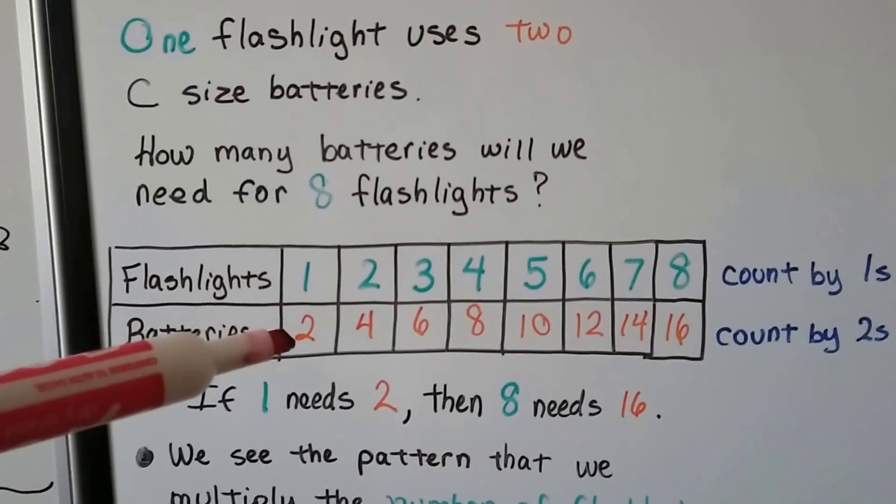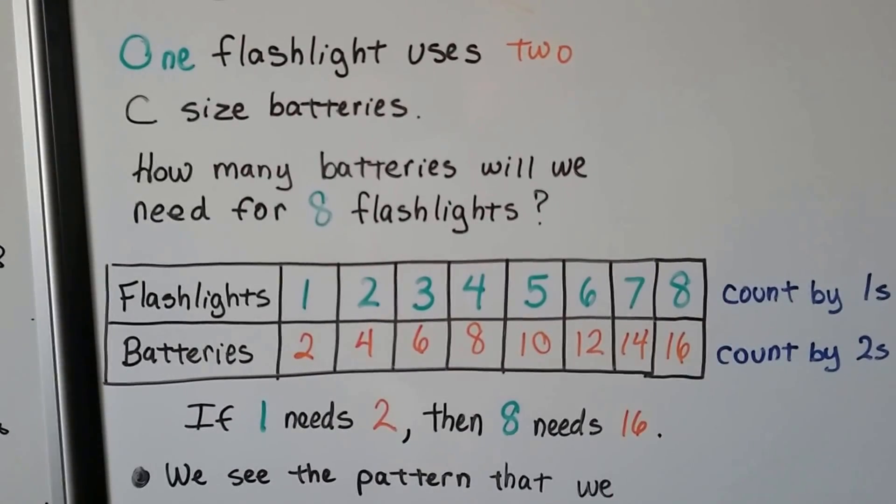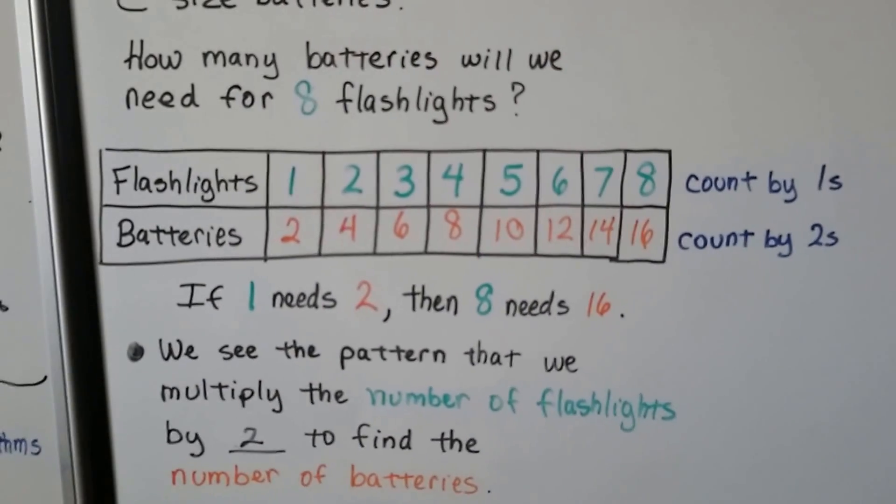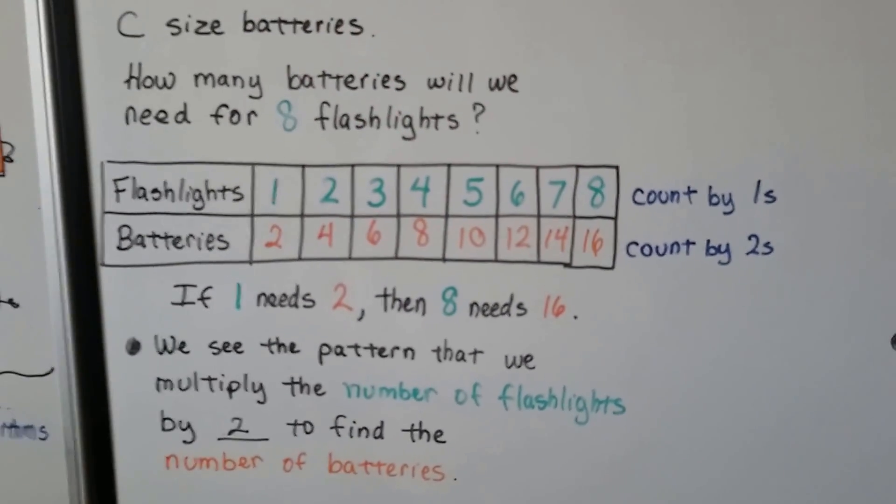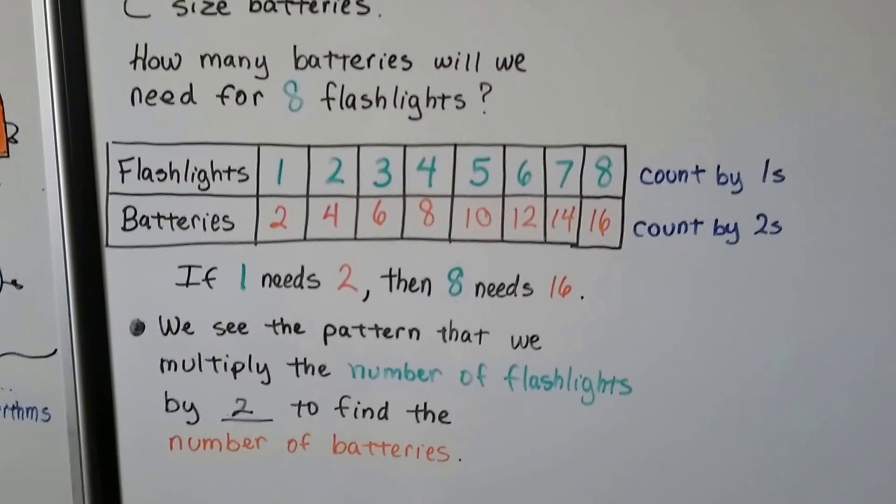If one flashlight needs two batteries, then eight flashlights will need 16 batteries. We see the pattern that we multiply the number of flashlights by two. It needs two batteries for each one.